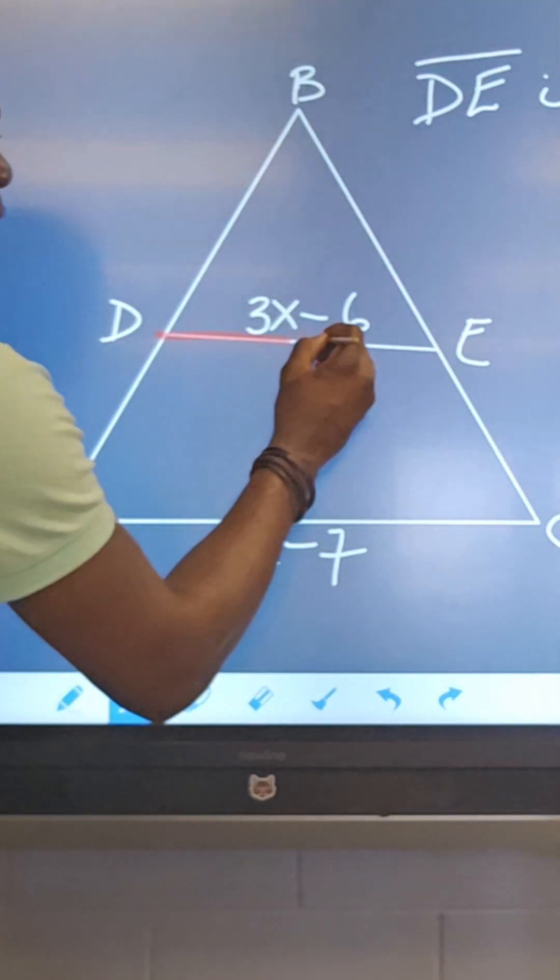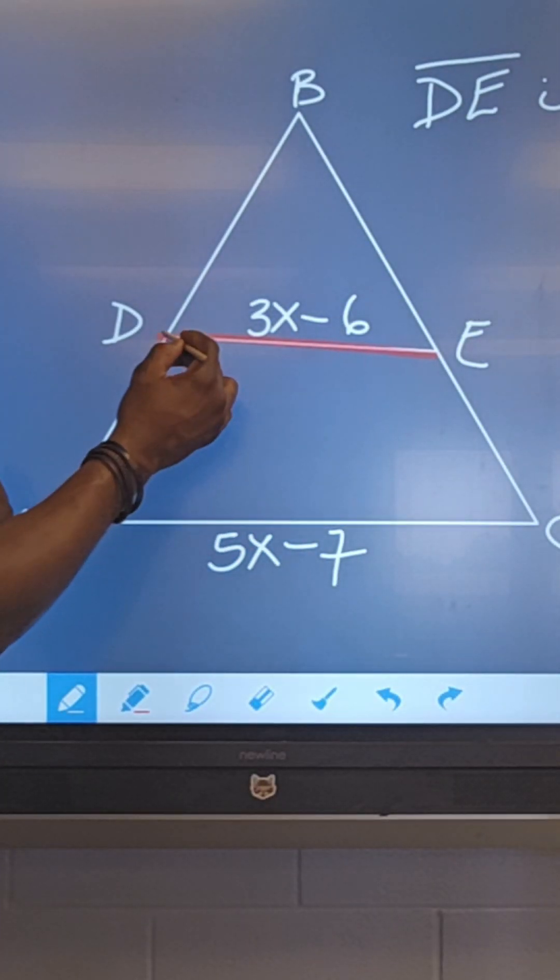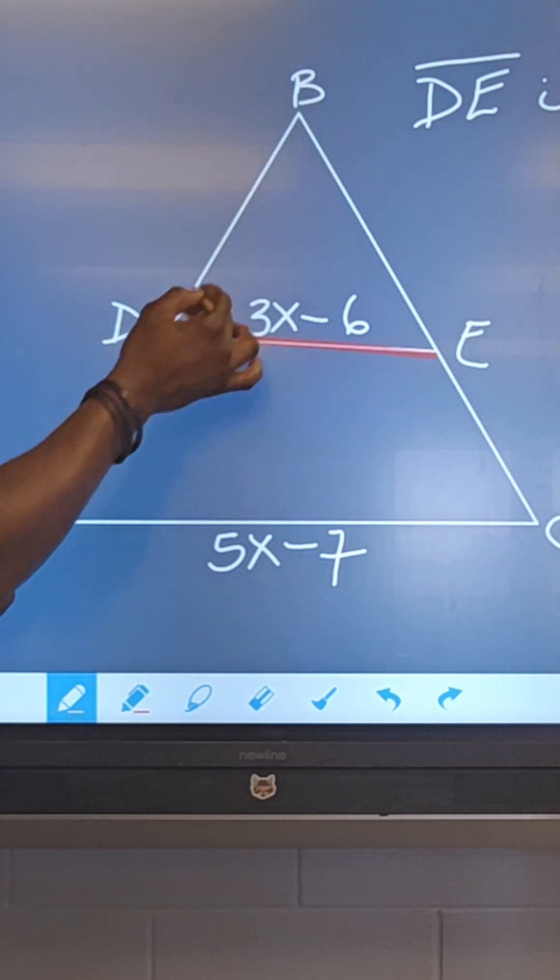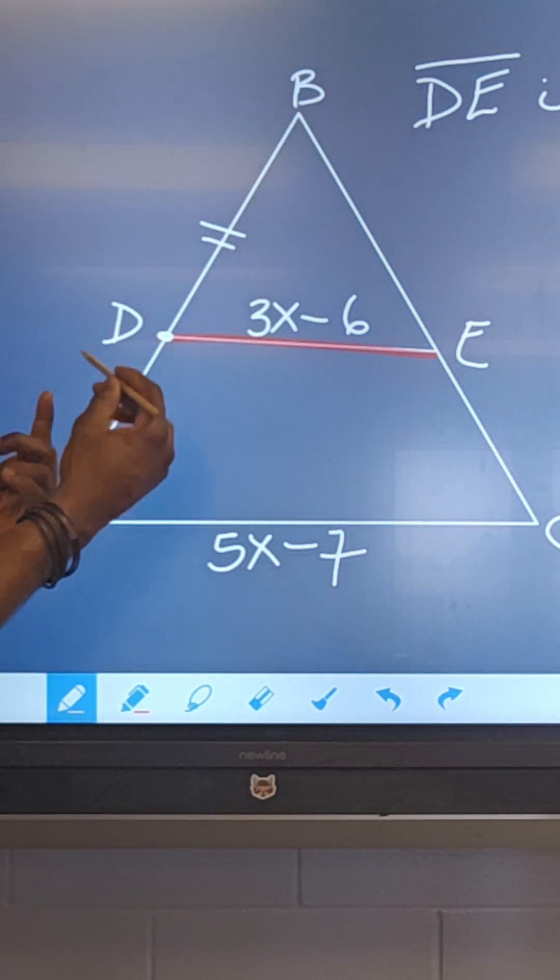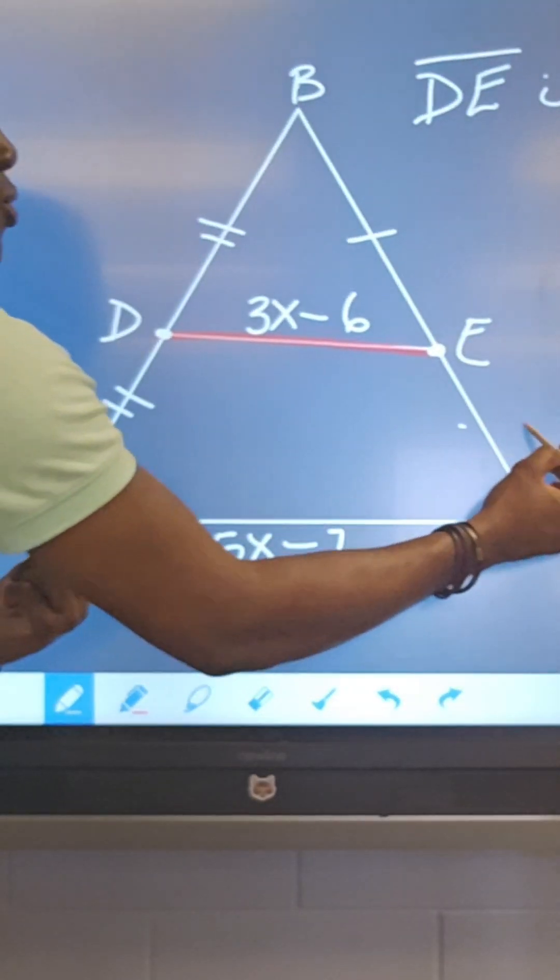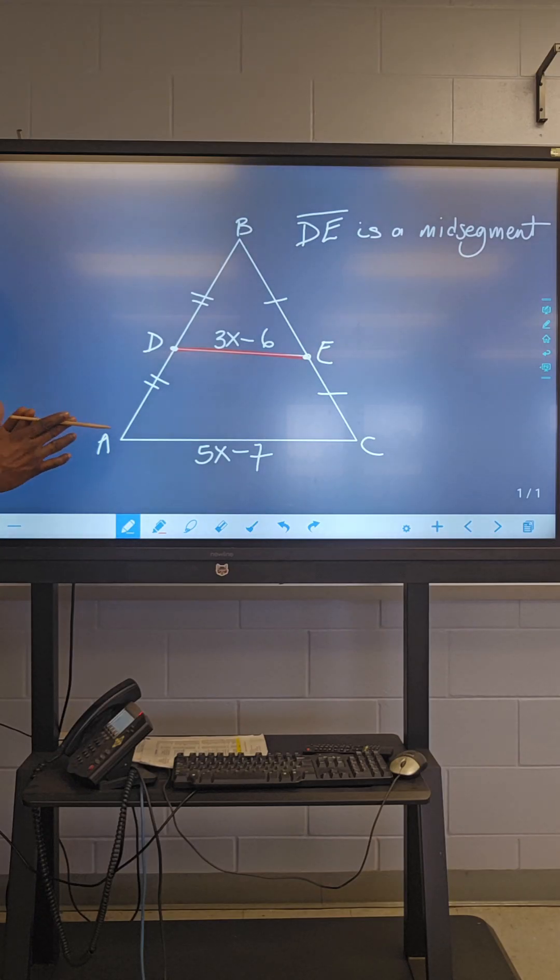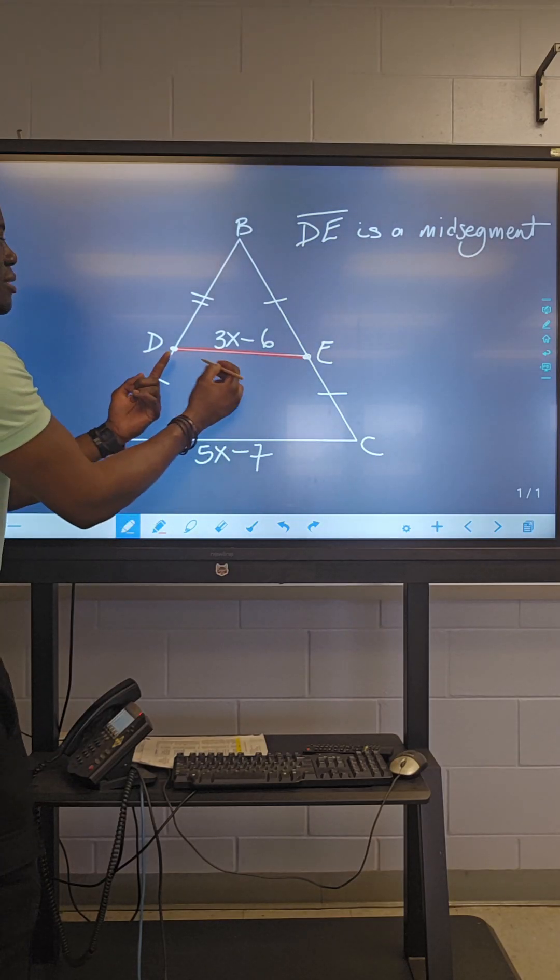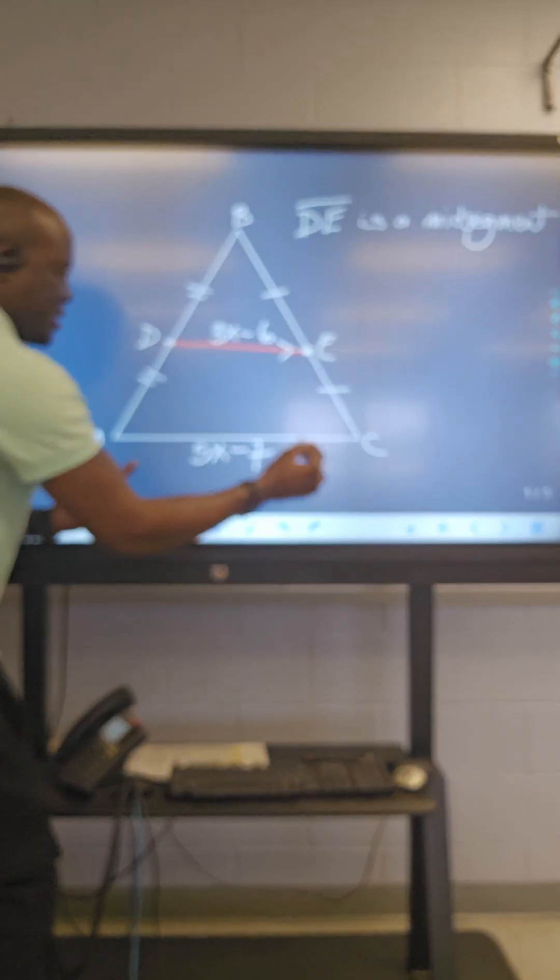D, E, right here, is a mid-segment. And when we say mid-segment, what it means is that D would have divided A, B into two equal parts, as well as E would have divided B, C into two equal parts. Because of that, it means then that D, E would be parallel to A, C.